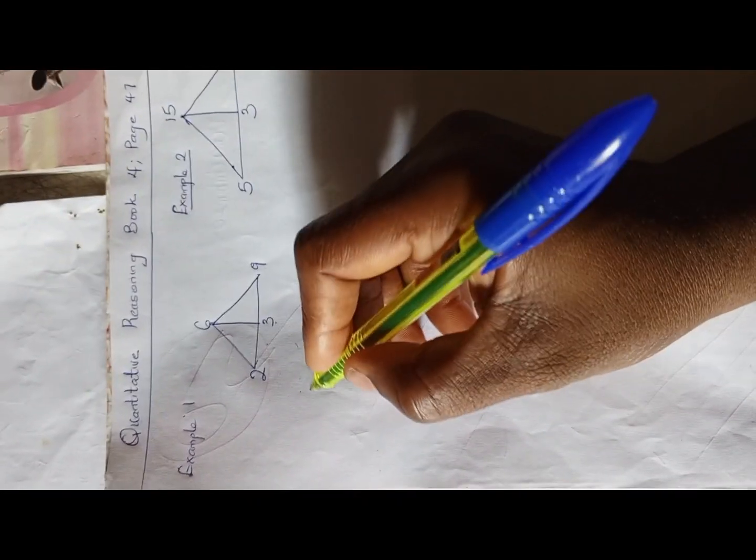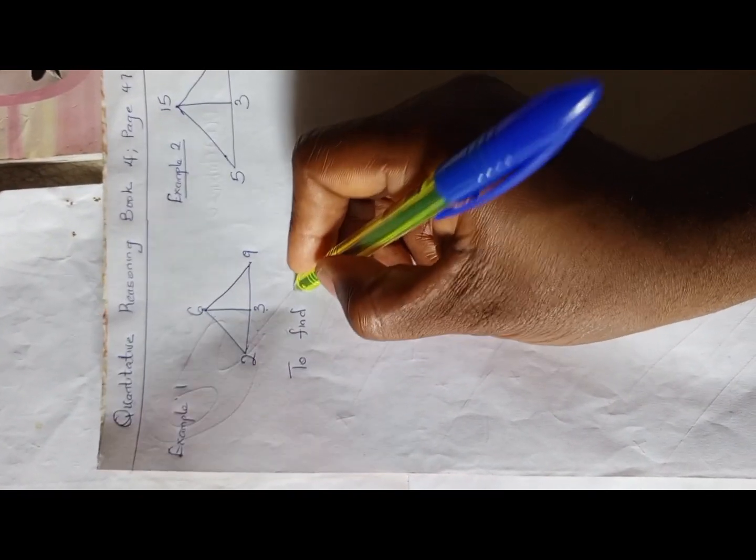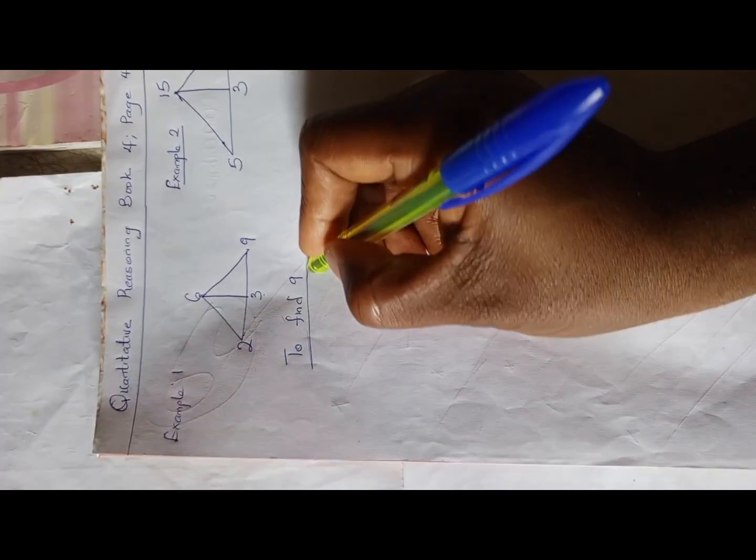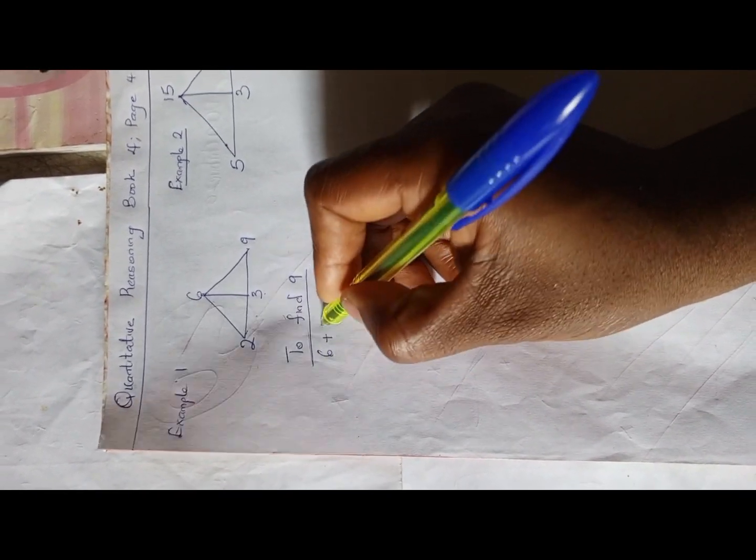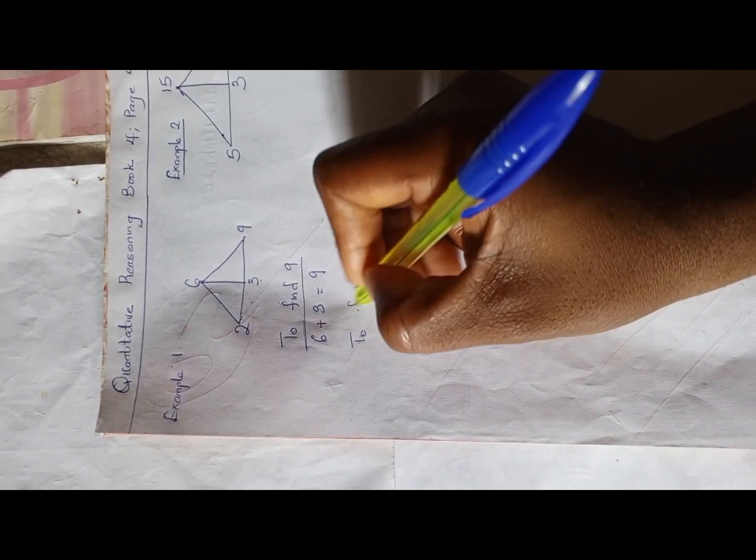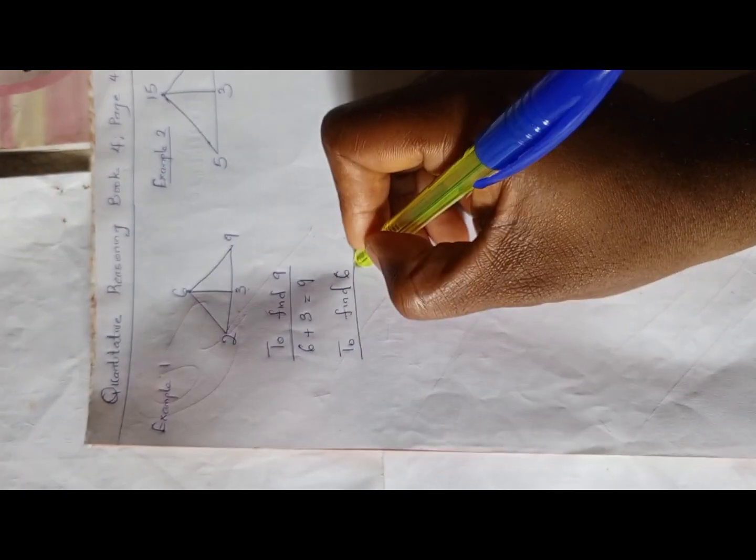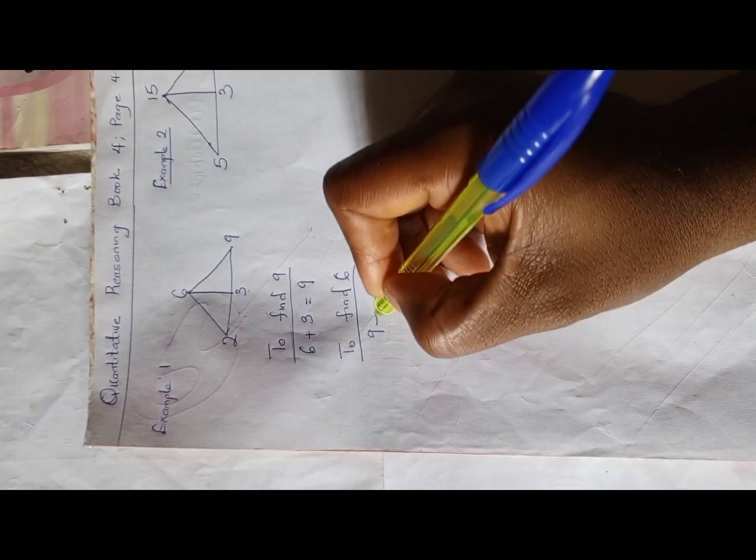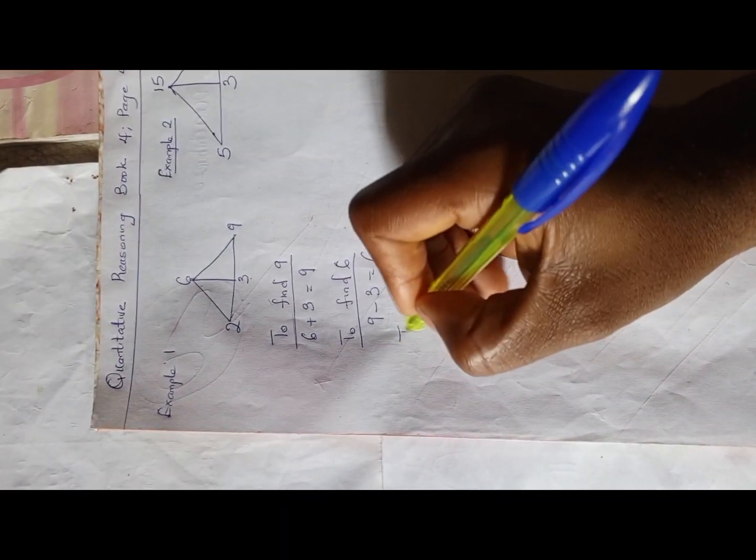To find 9, we have 6 plus 3 equals 9. To find 6, you just do the direct opposite: we have 9 minus 3 is 6. And to find 3, you have 9 minus 6 is 3.